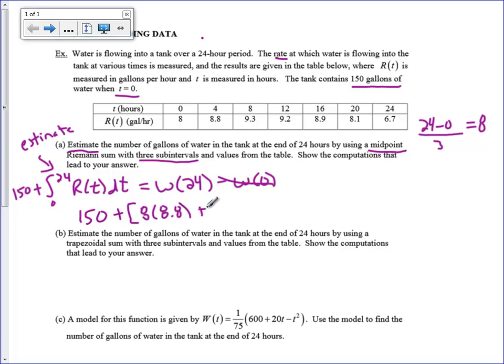And then we're going to add this to our second interval is from 8 to 16. So that has a width of 8 again. And our height, we're going to do at the midpoint of 9.2. And then plus our width of 8, 16 to 24. And then our height at our midpoint is 8.1. And if we have a calculator, we would go ahead and answer this. Without a calculator, we're stopping right there so that we don't make any mistakes.